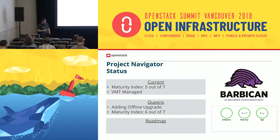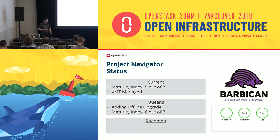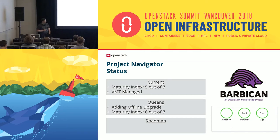In terms of project navigator status, we're currently at five out of seven. Vulnerabilities are managed and there's a Bandit job that goes through and checks for vulnerabilities within Barbican. We're going to add offline upgrade — the rolling upgrades — which will give us six out of seven. Seven out of seven requires multiple libraries in multiple languages like C, so I think only Nova might have that — probably about as good as we're going to get.